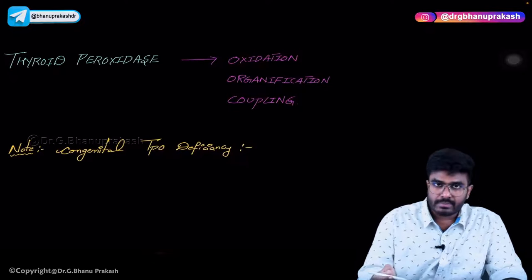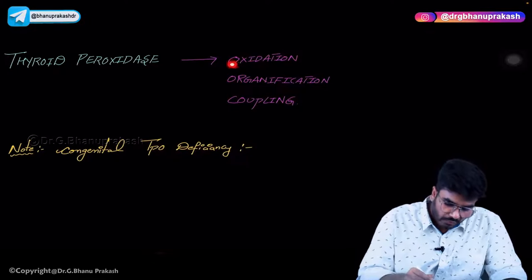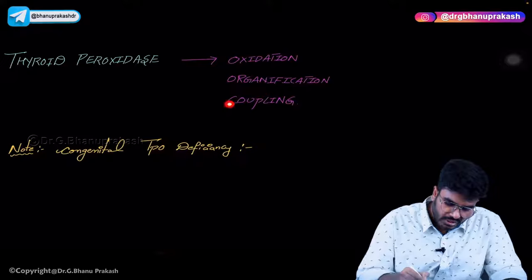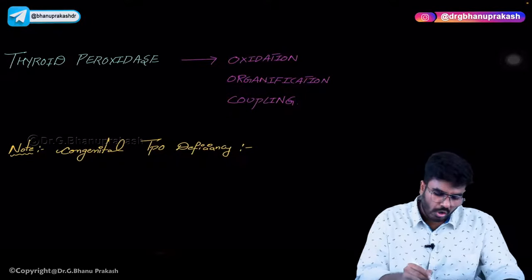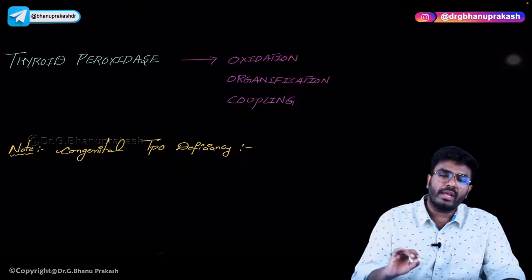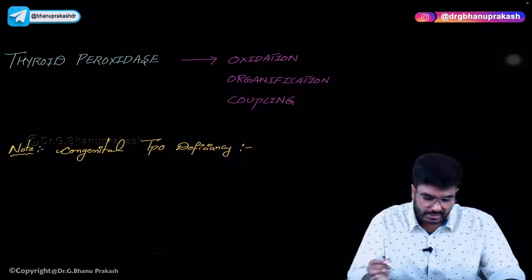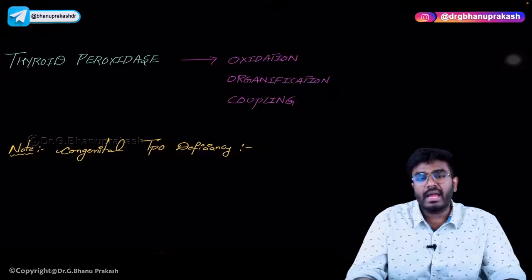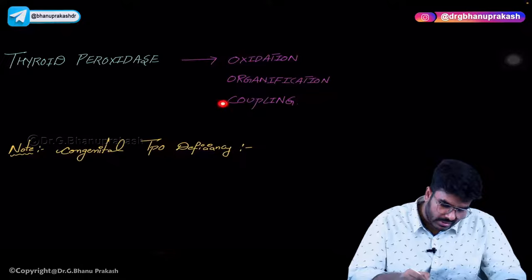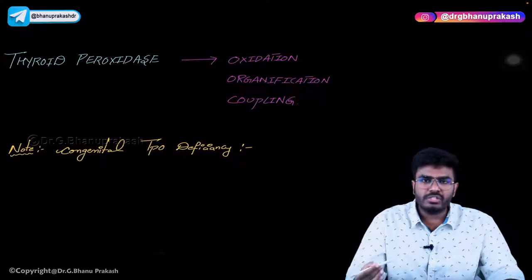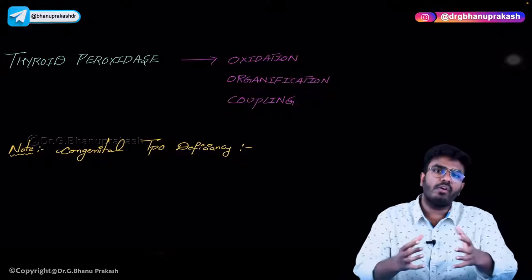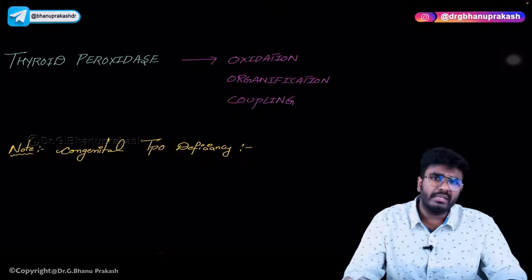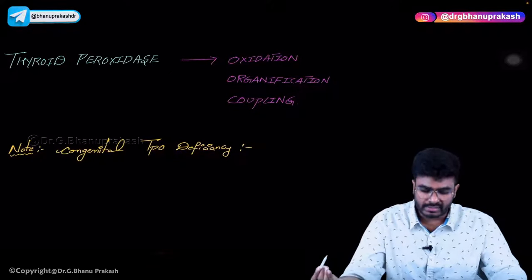Thyroid peroxidase is involved in three steps: oxidation — conversion of iodides into iodine; organification — iodines being added onto thyroglobulin molecules; and coupling — fusing one MIT with one DIT to form T3, or two DITs together to form T4.